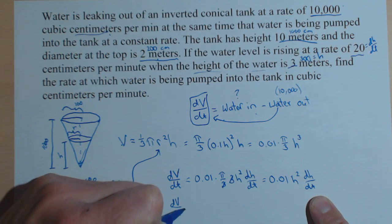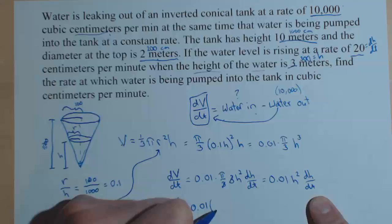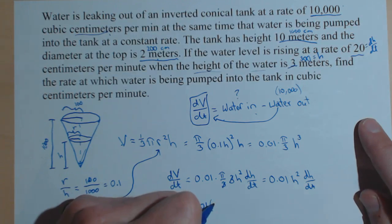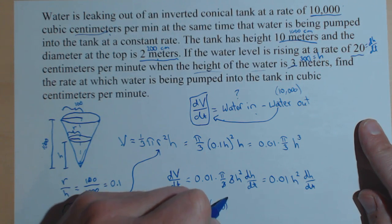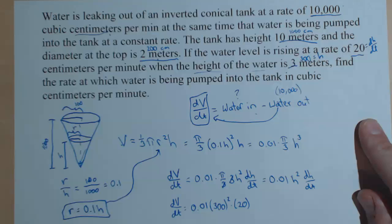So, dV/dt equals 0.01 times our h squared. So, times 300² times our dh/dt, which is 20. That gives us the change in volume with respect to change in time.